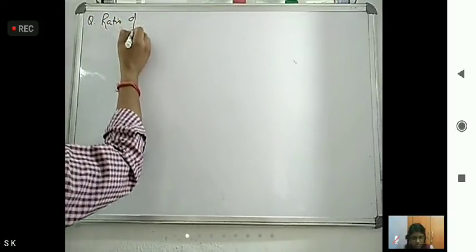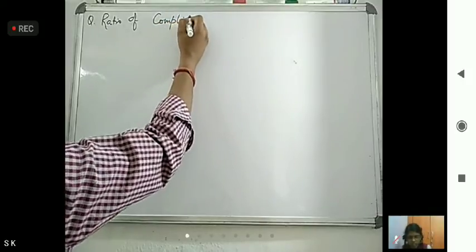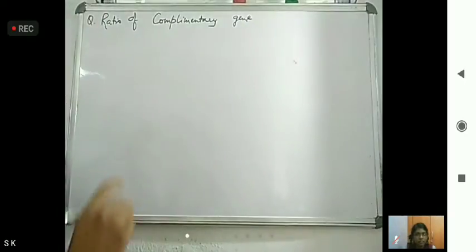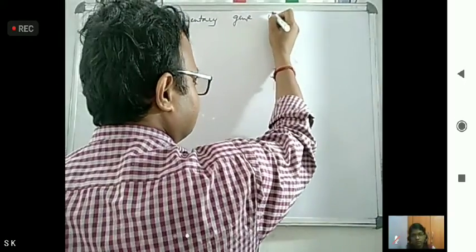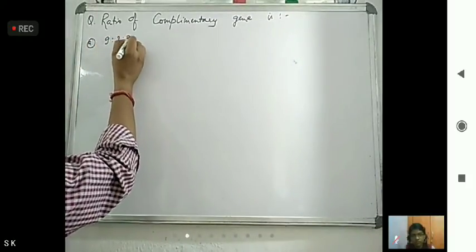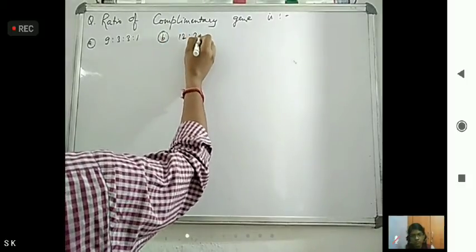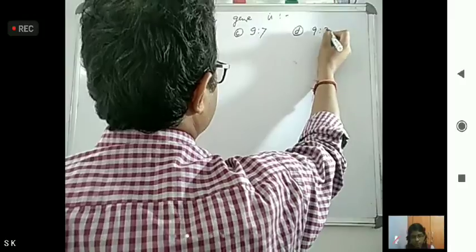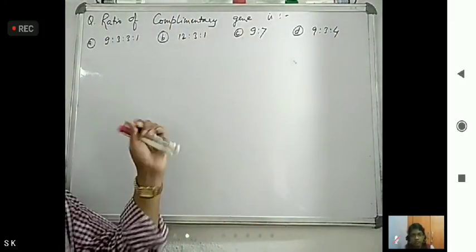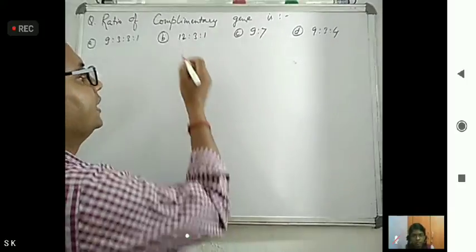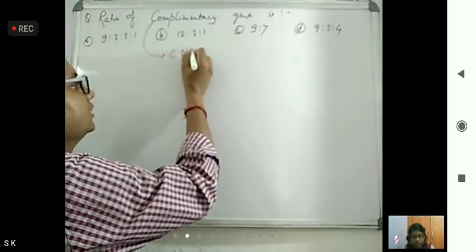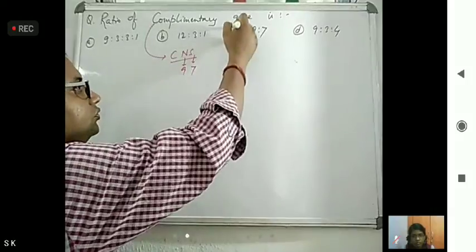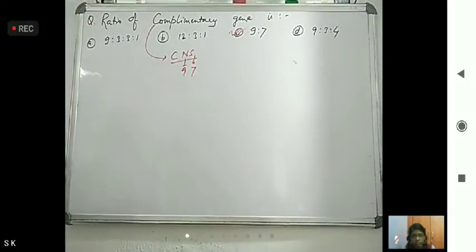Ratio of complementary gene. The options are 9:3:3:1, 12:3:1, 9:7, and 9:3:4. We already discussed complementary gene — remember this with C in the central nervous system mnemonic: C for complementary, N for 9, and S for 7. So the complementary gene ratio is 9 is to 7.